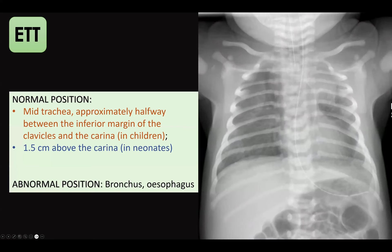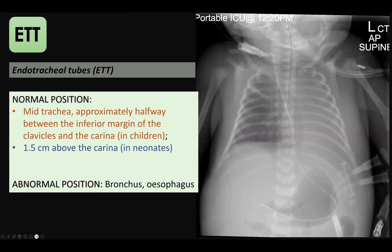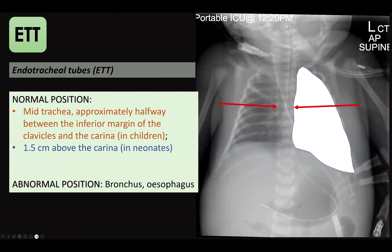In this example, the lower border of the clavicles is visible, but the endotracheal tube is almost at that level — it is too high and should be pushed down a little. We also see pneumothorax and pneumomediastinum, with a large pocket of air in the mediastinum. In another case, the midway between the carina and clavicles is identified, but the endotracheal tube ends in the proximal right main bronchus — an abnormal position — complicated by complete collapse of the left lung.